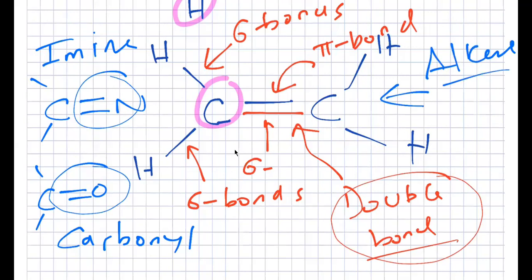We're compressing this material because the semester goes by quickly. Every double bond is made up of a sigma and a pi, and every carbon is always going to have four bonds to it — don't forget that. If it's a neutral carbon, it should have four bonds. The only exception is something called a carbene, but we'll talk about that later.